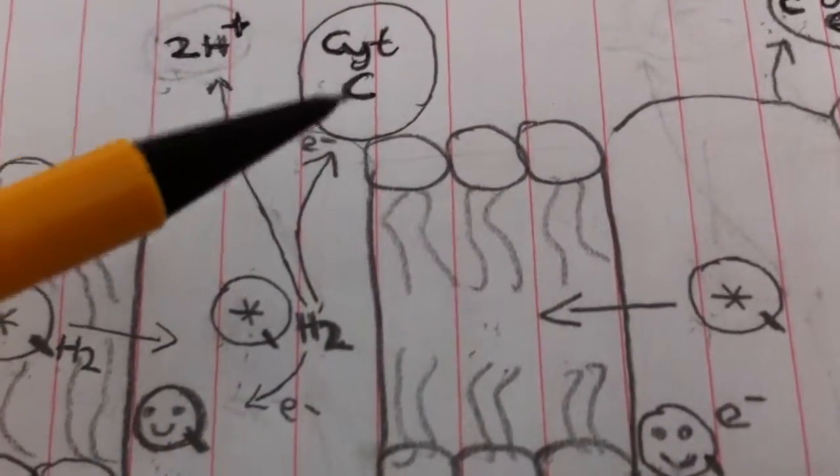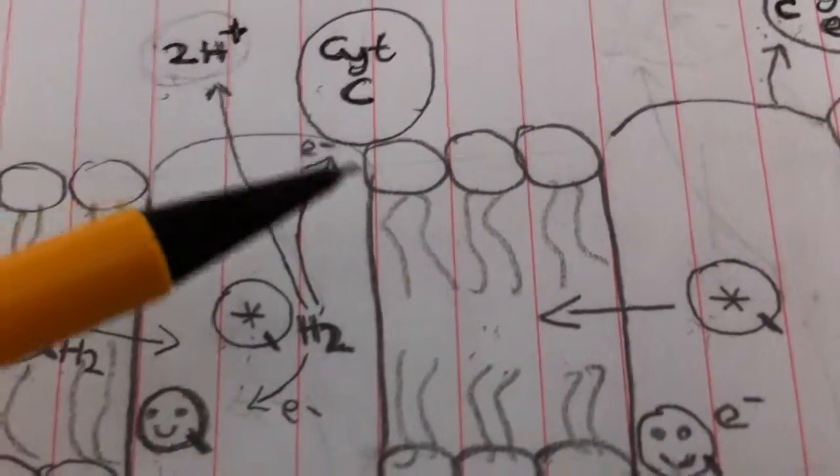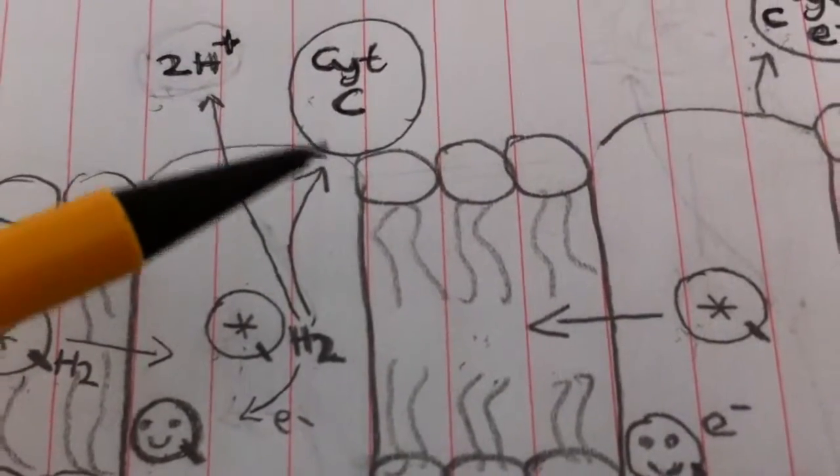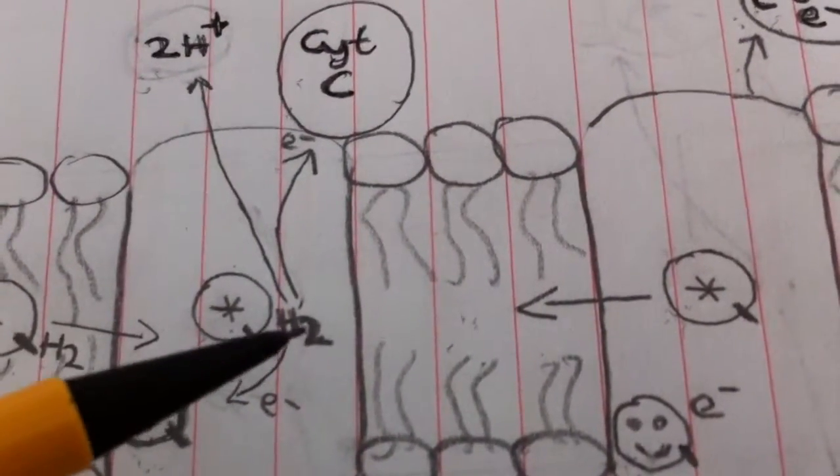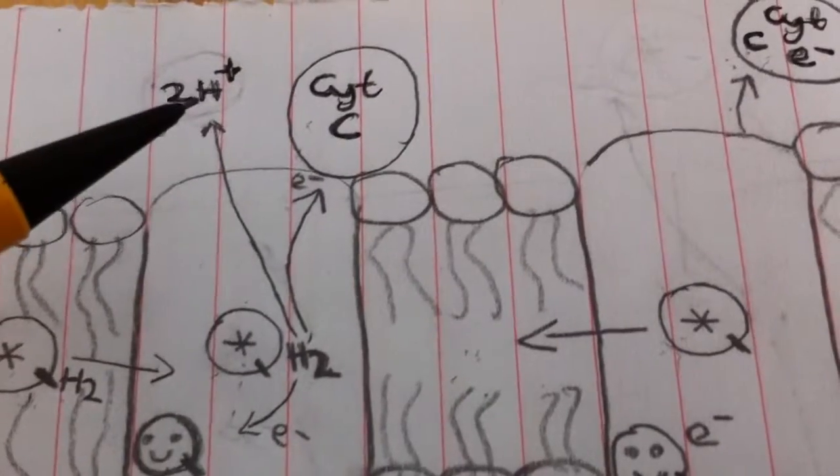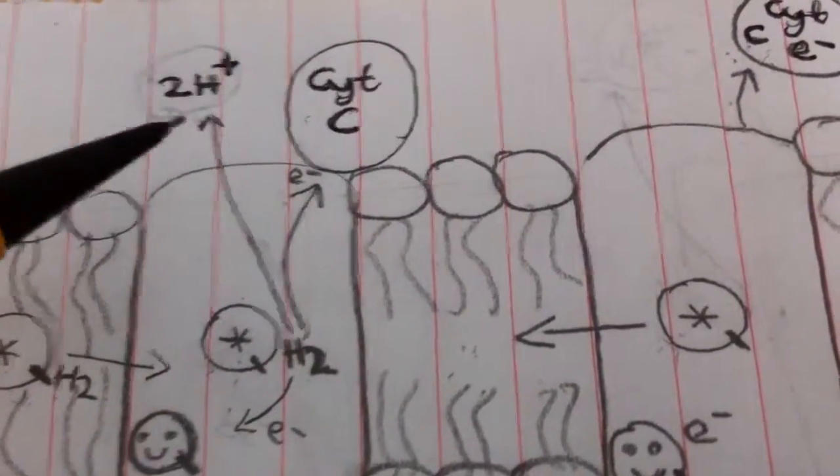It gives another electron to cytochrome C, which is docked with complex 3, waiting to take an electron to complex 4. And its two protons get pumped out into the intermembrane space to create the gradient for making ATP.